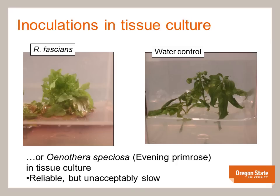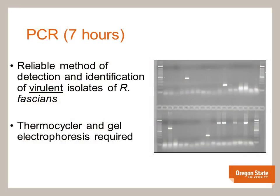In our experience, primrose consistently gives symptoms similar to those seen in naturally infected ornamental plants, and was found to be more representative of the kinds of plants being infected in nurseries. Although pathogenicity testing is reliable, it's a very slow process and growers cannot wait an entire month to find out whether their plants are infected. So in 2005, we started developing a PCR assay specific to virulent strains of Rhodococcus fascians. DNA is extracted directly from symptomatic plant tissue or from suspect bacterial colonies. This assay reduced confirmation time to a single day, though it requires a thermocycler and electrophoresis gel run by well-trained staff.